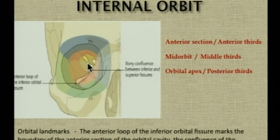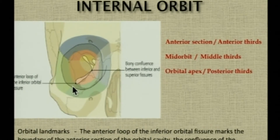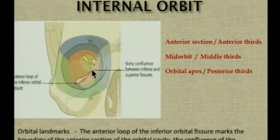The internal orbit — the orbital walls and the apex — can be further divided into the anterior third, the middle third, and the posterior third. The anterior third starts from just behind the rim up to the anterior loop of the inferior orbital fissure. The middle third spans from that anterior entry of the fissure to the confluence of the inferior and superior orbital fissures. Behind this confluence is the posterior third, or the orbital apex.